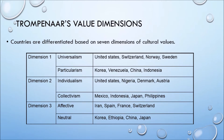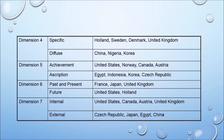Dimension 4 — Specific: Holland, Sweden, Denmark, United Kingdom. Diffuse: China, Nigeria, Korea. Dimension 5 — Achievement: United States, Norway, Canada, Austria. Ascription: Egypt, Indonesia, Korea, Czech Republic. Dimension 6 — Past and Present: France, Japan, United Kingdom. Future: United States, Holland. Dimension 7 — Internal: United States, Canada, Austria, United Kingdom. External: Czech Republic, Japan, Egypt, China.